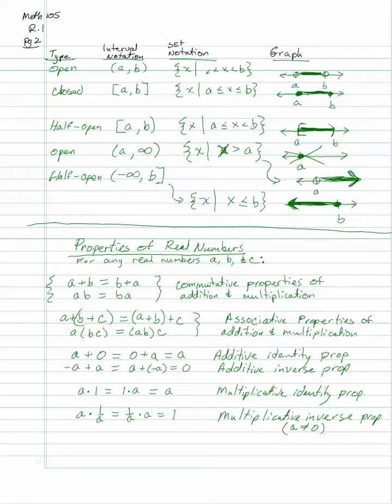Finally, the distributive property: A times the quantity B plus C equals A times B plus A times C. You multiply both B and C by A, then add the results.